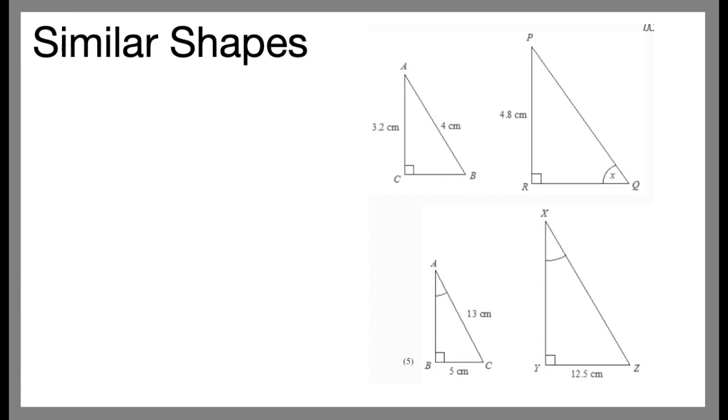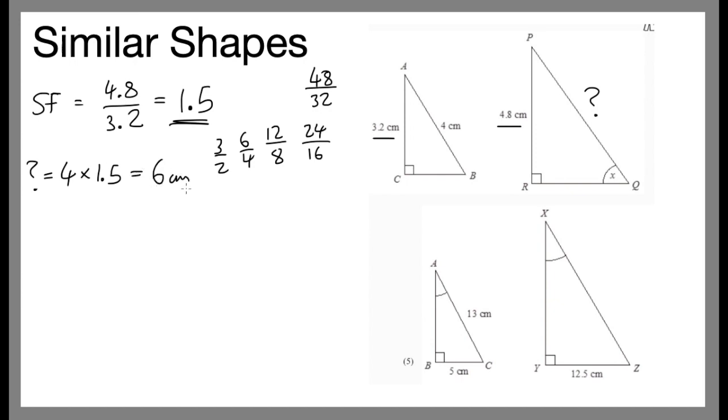OK, three more examples for you. On this one, we have two similar shapes. We want to find what this length is here. So, we have 4.8 and 3.2. To find the scale factor, do 4.8 divided by 3.2. Now, that's a bit tricky, but we can have a think about it. We could do, I suppose, 48 divided by 32. So, we could start with 48 over 32. Half that, we get 24 over 16. Then we get 12 over 8. 6 over 4. 3 over 2. That's our old friend. 1.5. OK, scale factor is 1.5. So, to find the question mark, I do 4 times by 1.5, which is 6. They won't all be 1.5, your scale factors. I know it looks that way.